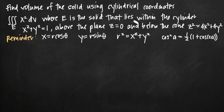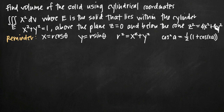We've been told that E is a solid that lies inside a cylinder. The equation of the cylinder is x squared plus y squared equals 1. The solid lies above the plane z equals zero, and also below the cone z squared equals 4x squared plus 4y squared. So the solid E is everything within the bounds of those three equations.